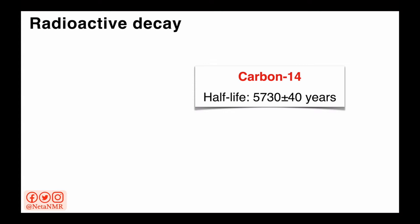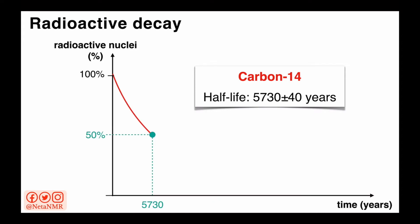The time that it takes for the initial amount of carbon-14 atoms present in the sample to decay to half of that amount is called a half-life. For carbon-14, this half-life is 5730 ± 40 years. You can see this decay in this figure. After one half-life — that is, after about 5730 years — the number of radioactive carbon-14 nuclei decreases to half.